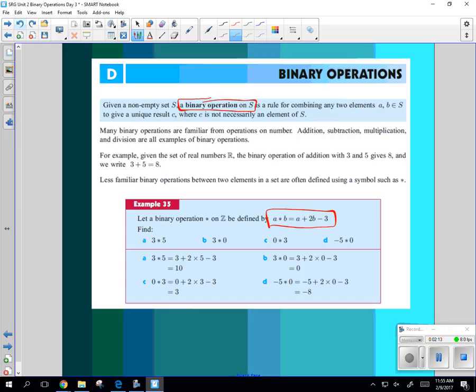Take this A star B, and you have zero star three. So you take zero plus two times three minus three, and what's that going to be? Six minus three is three. Did I do that right? A is zero, two times three, minus three, yes, it's three. And you could do that with any combination you want.